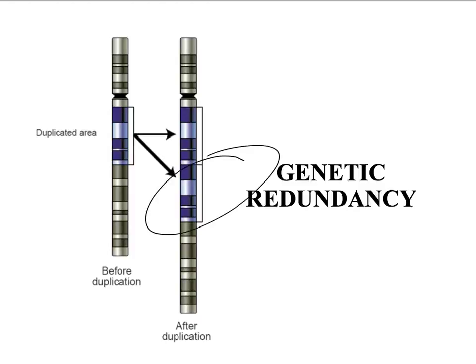This causes the effect of genetic redundancy where one gene can mutate to serve a new function in a different part of the organism and the other can stay the same and retain its original function.